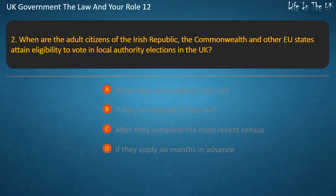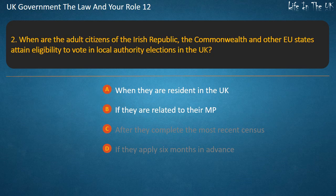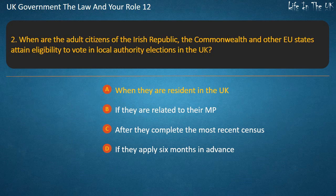Question 2: When are adult citizens of the Irish Republic, the Commonwealth and other EU states eligible to vote in local authority elections in the UK? Options: when they are resident in the UK; if they are related to their MP; after they complete the most recent census; if they apply 6 months in advance. Answer: When they are resident in the UK.